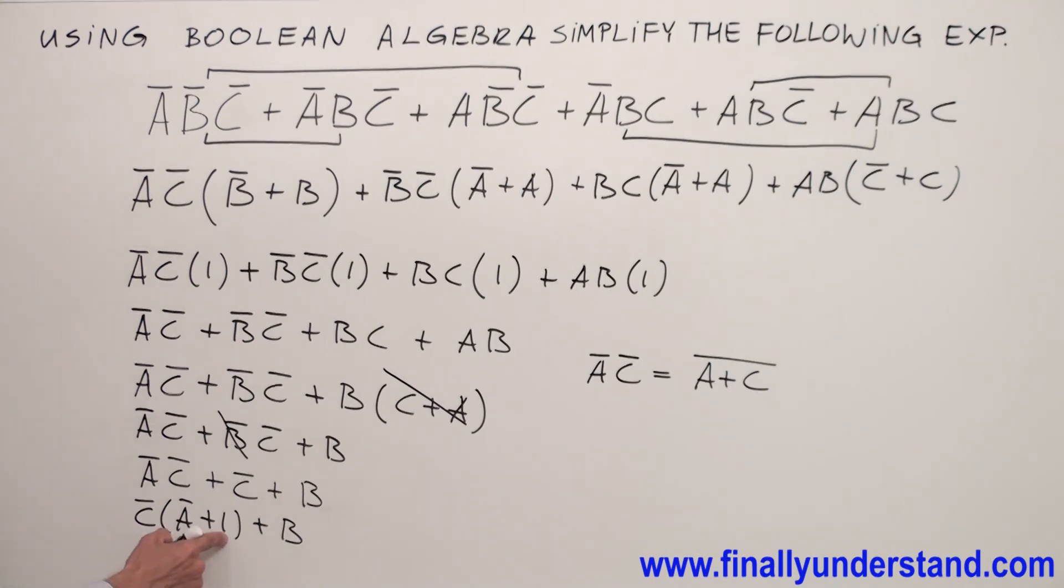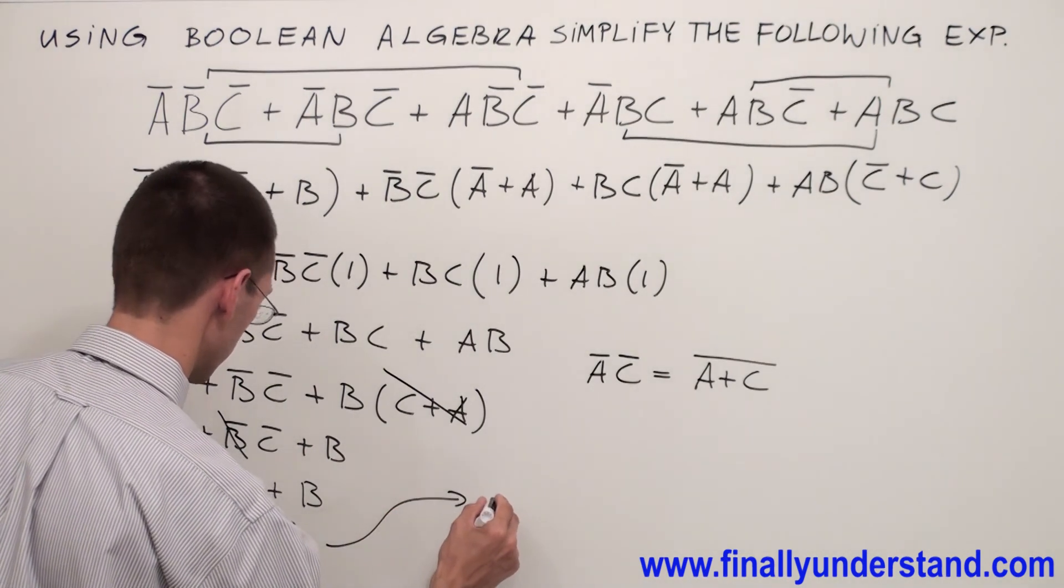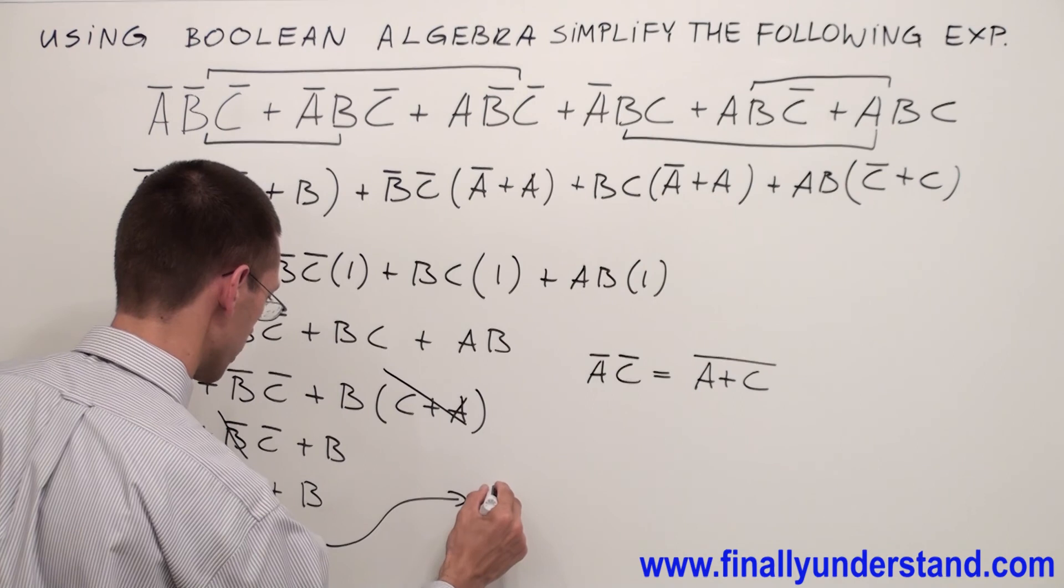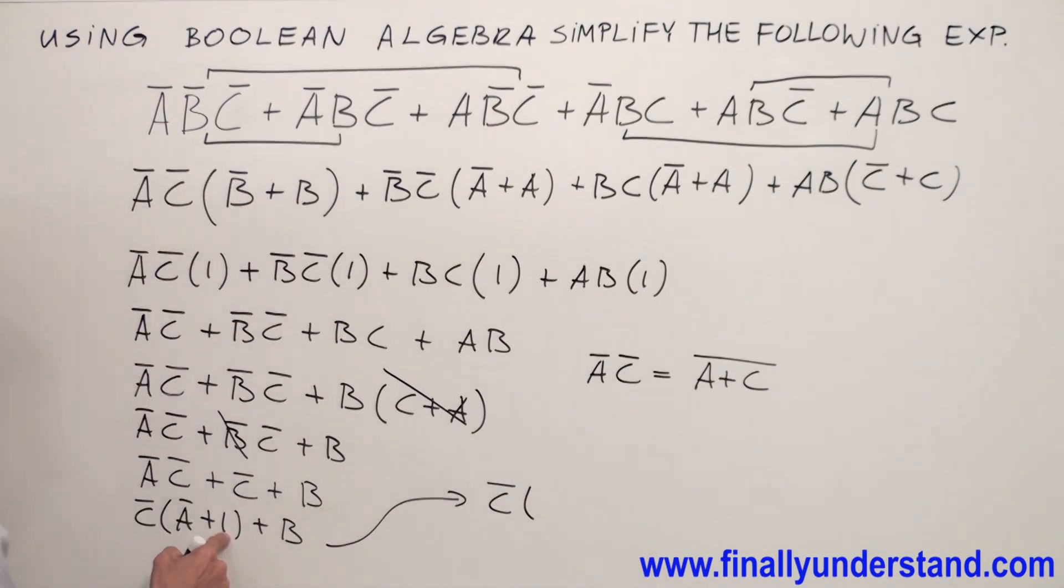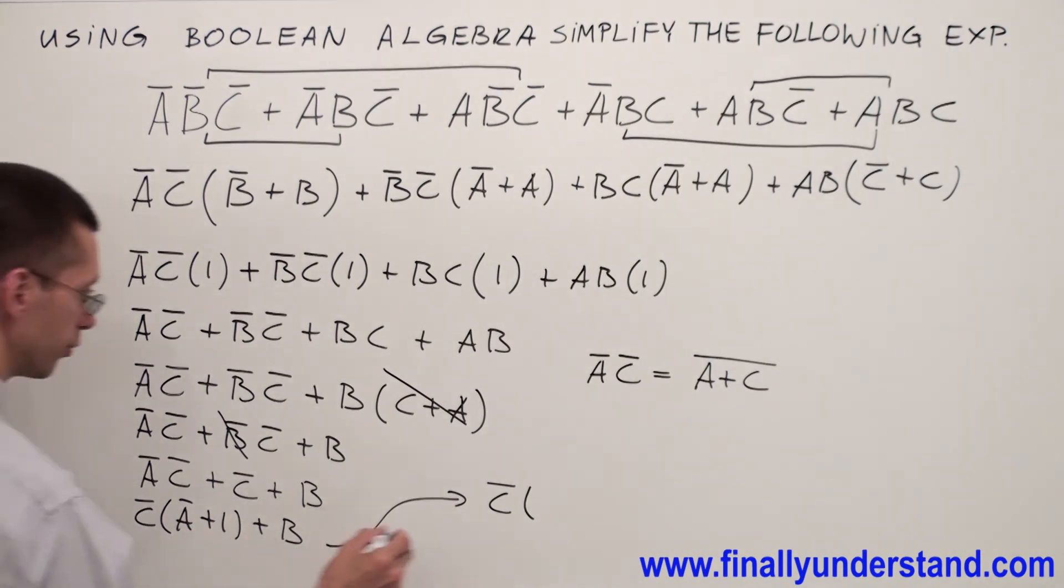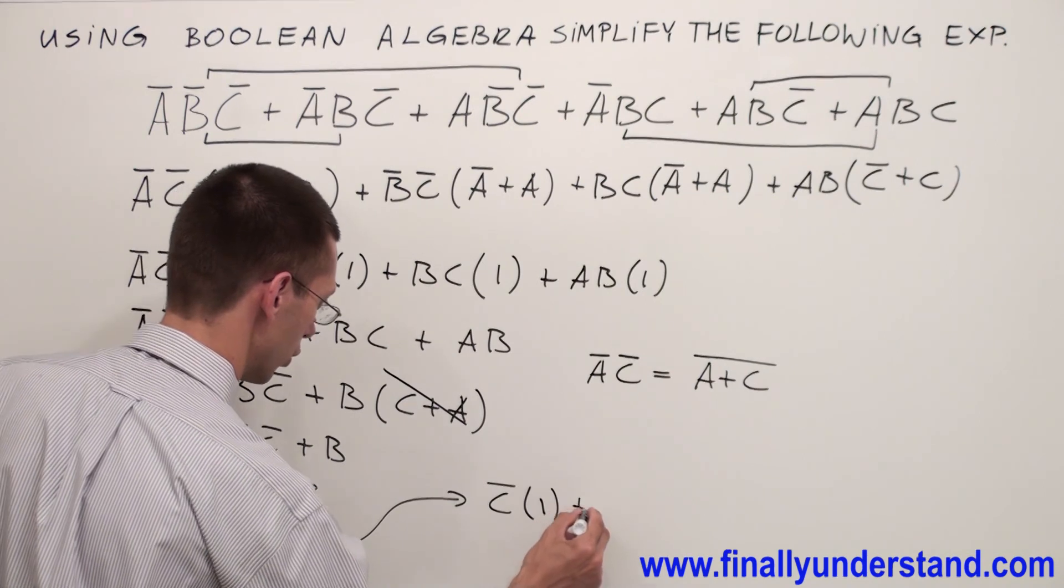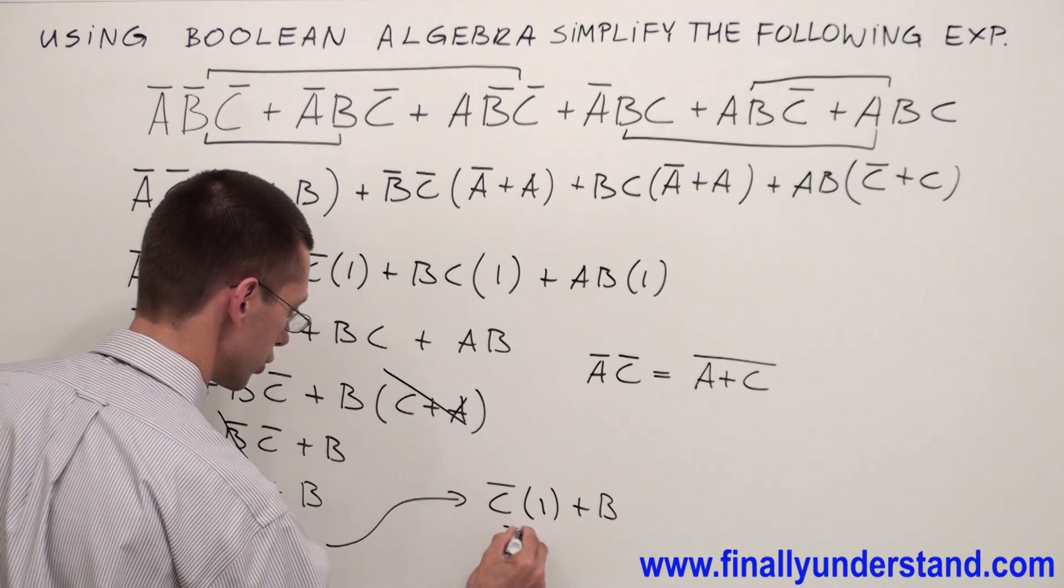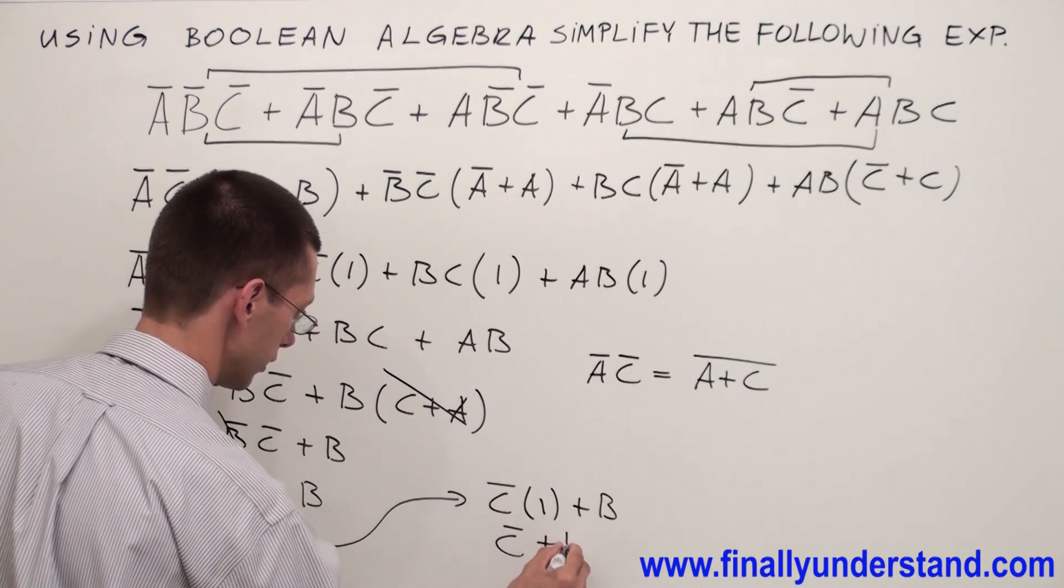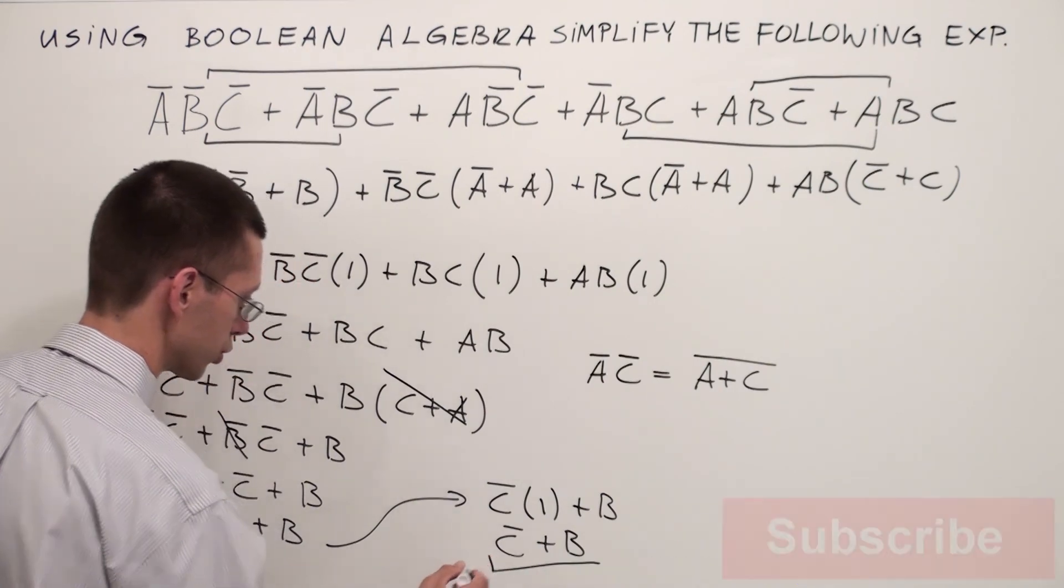1 or anything is always equal 1. That's why my expression is going to look like this. C̅ because 1 or A̅ will give me 1, it's going to be ended with 1 or B. C̅ and 1 is C̅ and I'm going to copy down B and this is the solution for the problem.